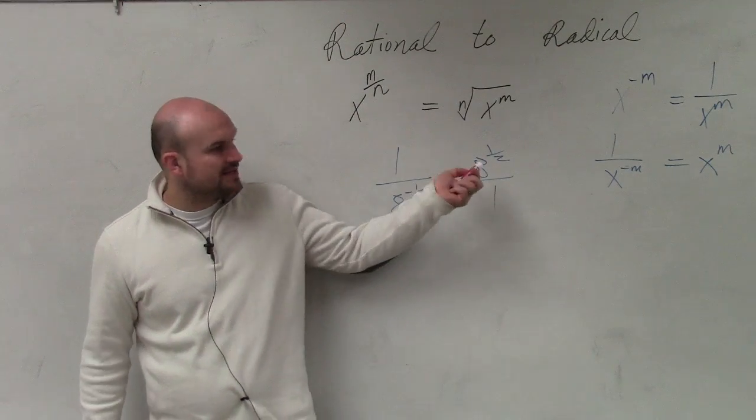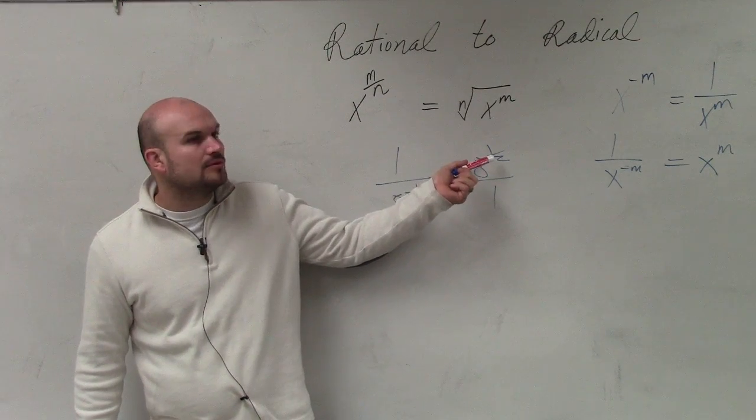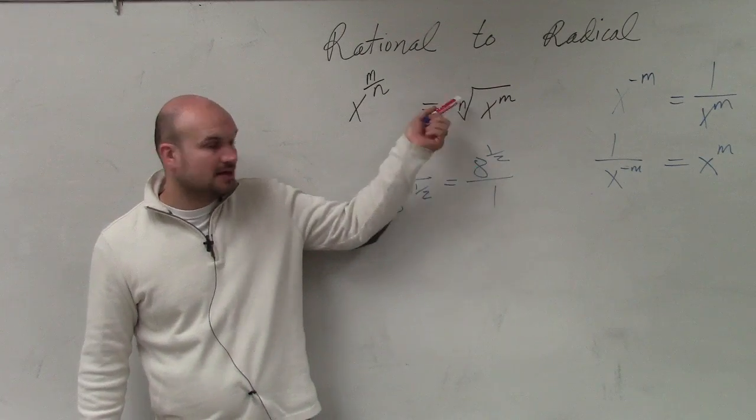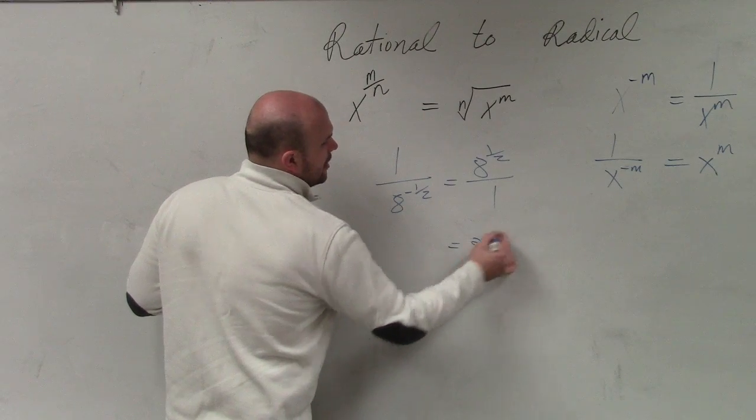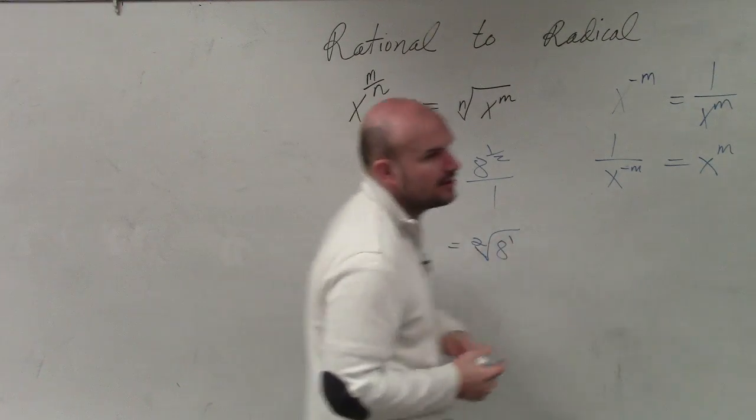Now, the next thing is we can rewrite our rational power as a radical expression. I don't need to write it over 1. So that's going to be the square root of 8 to the first power.